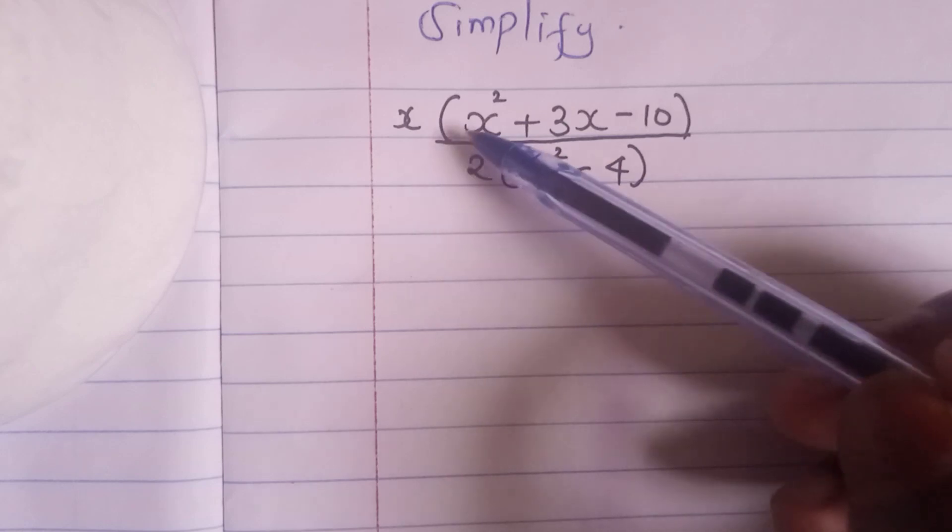So we will begin by what is in the bracket. And if you can see x squared plus 3x minus 10, this is a quadratic equation. So we can solve it first and then we will proceed. And I want to begin by solving this quadratic expression. So this is x, the x that is outside.